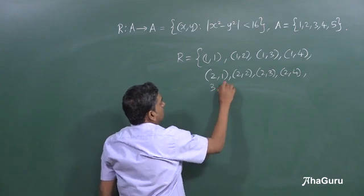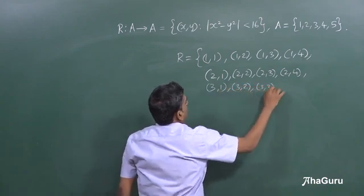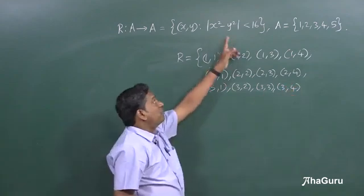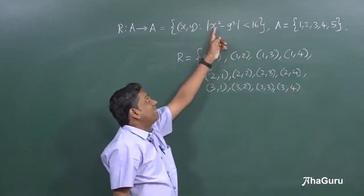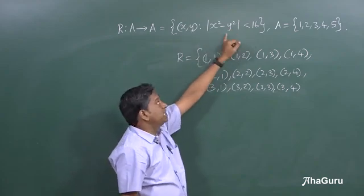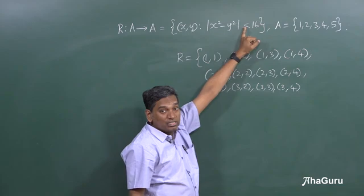Again 3 comma 1, 3 comma 2, 3 comma 3 and 3 comma 4 will satisfy, but 3 comma 5 is 9 minus 25 is minus 16, modulus is 16 and 16 is not less than 16. Note, it is not less than or equal to, it is strictly less than.